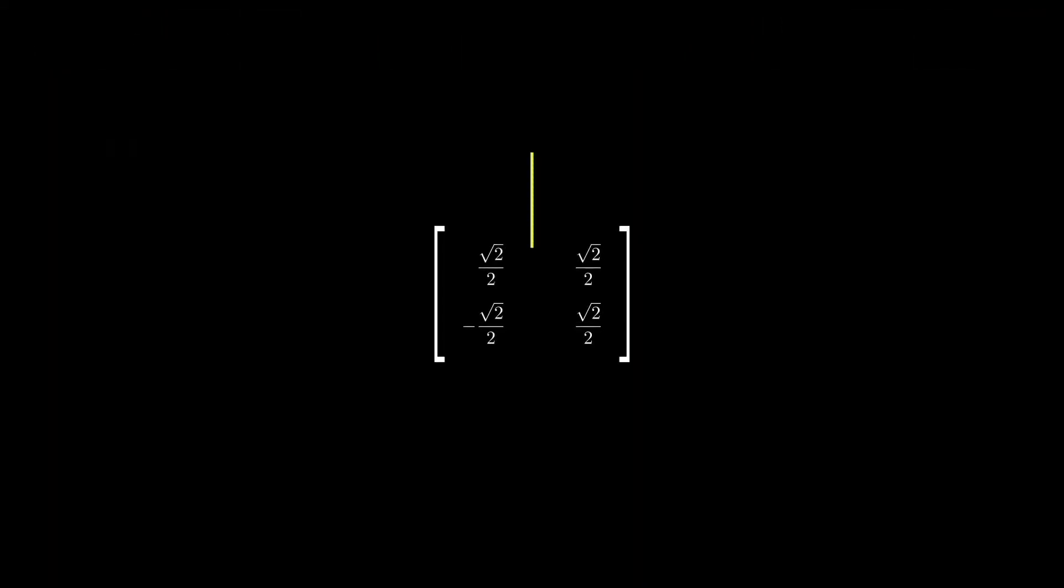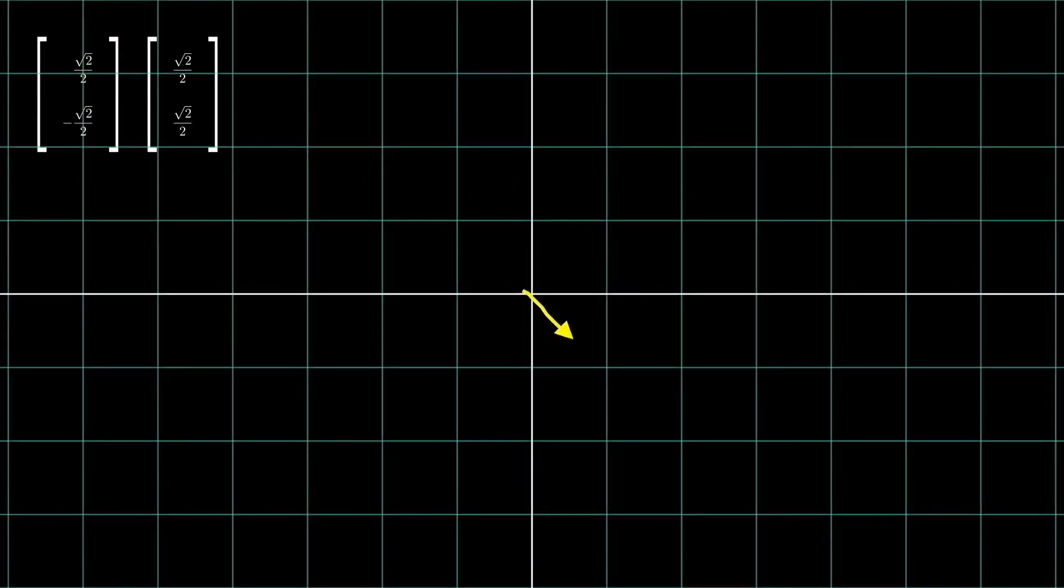This one is orthogonal matrix. We can quickly verify the two column vectors are unit and orthogonal. What kind of transformation does it have? Wow. A perfect rotation. No scaling, no stretching, no shearing, no reflection, but a pristine rotation.